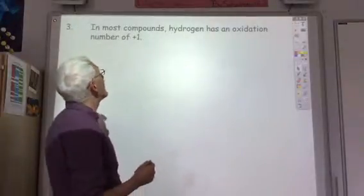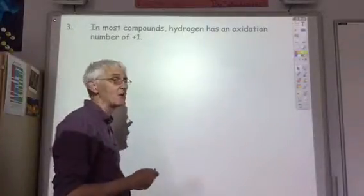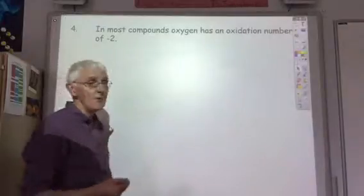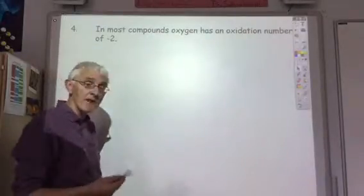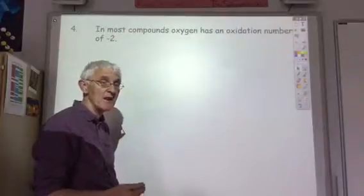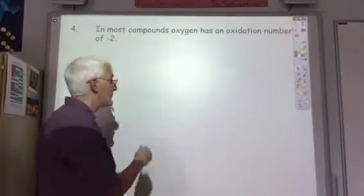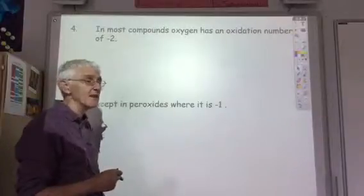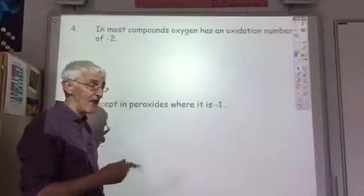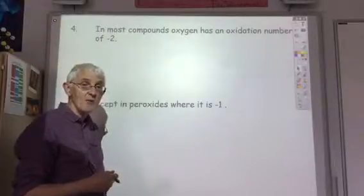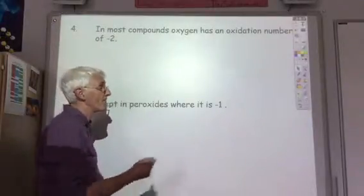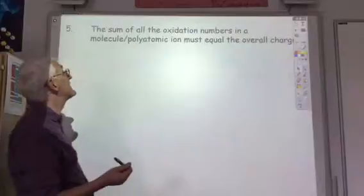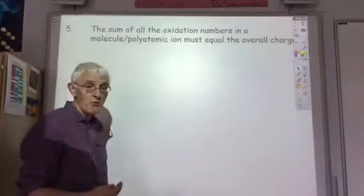The third rule is that in most compounds, hydrogen will have an oxidation state of plus 1. The fourth rule is that in most compounds, oxygen has an oxidation number of minus 2. There is one common exception: in peroxides like hydrogen peroxide, the oxidation number of oxygen is minus 1. The final rule is that the sum of all the oxidation numbers in a molecule or a polyatomic ion must equal the overall charge.